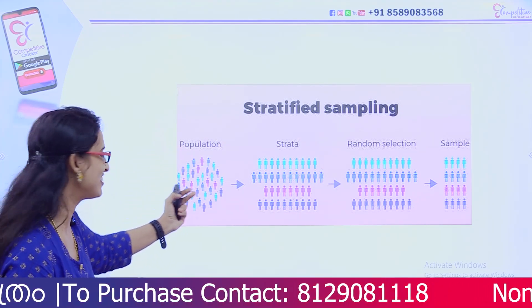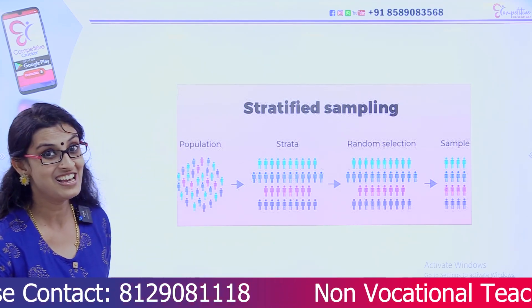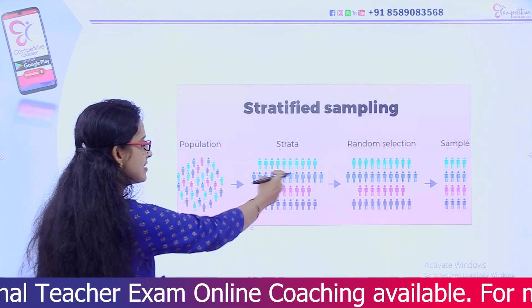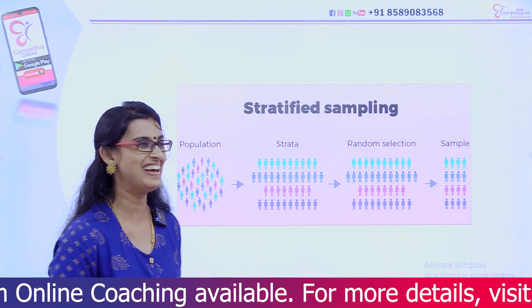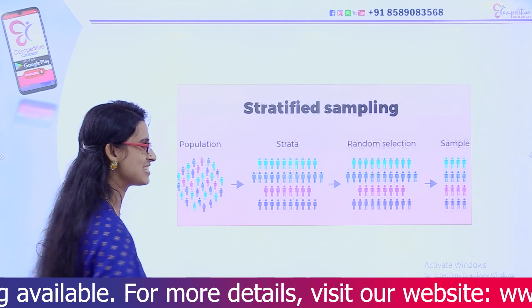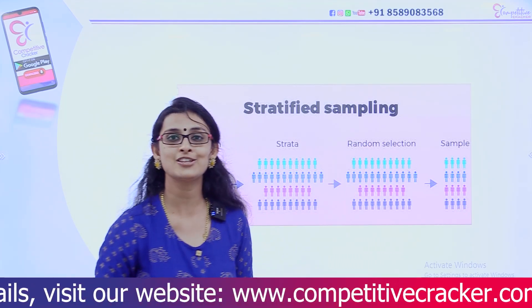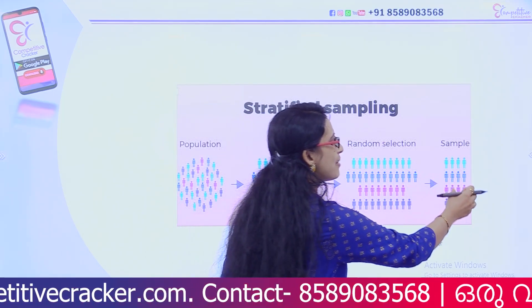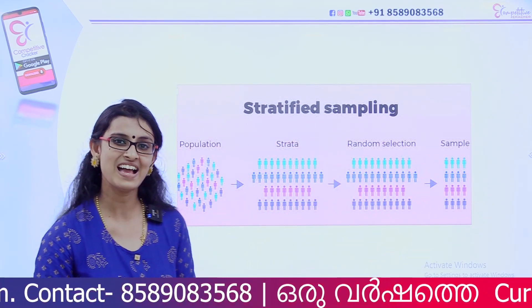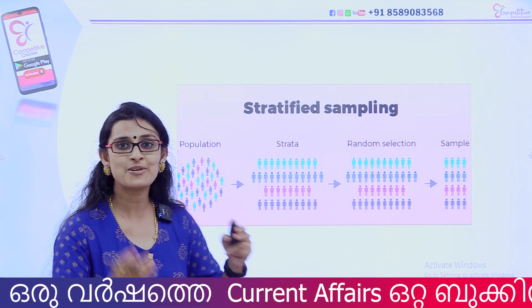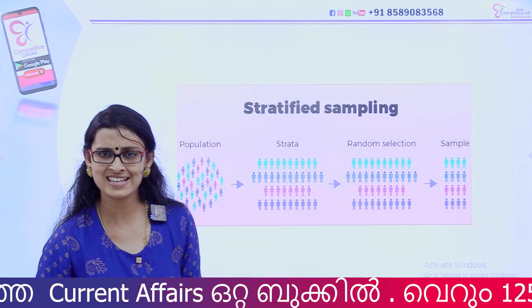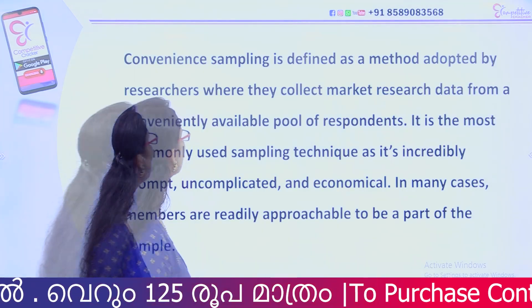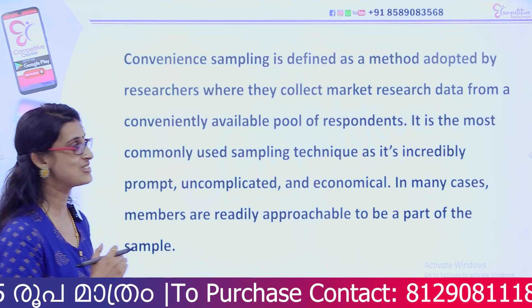Within each stratum, we classify properly and offer random selection. We give samples from each particular stratum. Stratified sampling is a very suitable method when the population has distinct sub-groups with different characteristics.